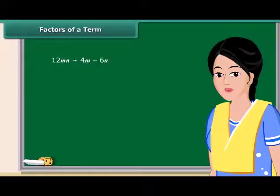A term is a product of its factors. But what are these factors? Look at this term. We say that 3, X and Y are the factors of the term 3XY.